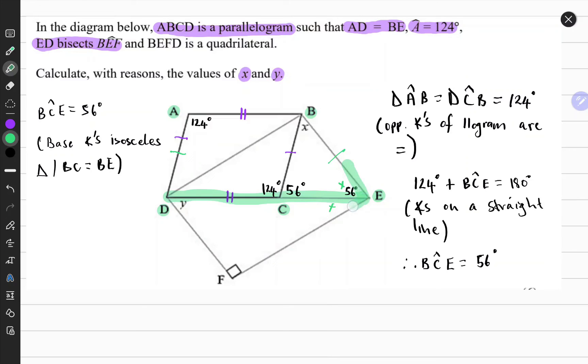Earlier on we found out that line segment DE bisects this angle here into two parts. So if this angle is 56 degrees, it would mean that this angle should also be 56 degrees. So we might as well note that already.